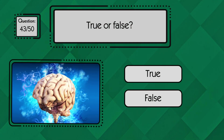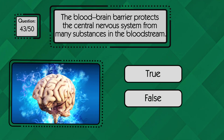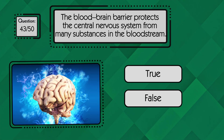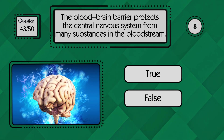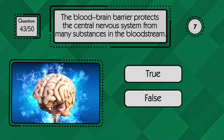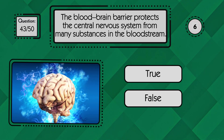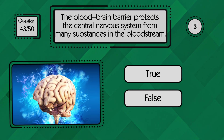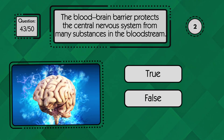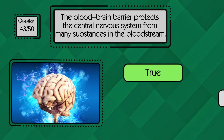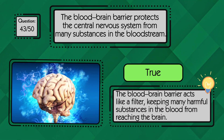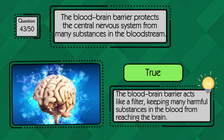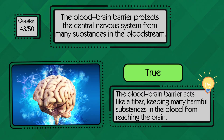True or false: the blood-brain barrier protects the central nervous system from many substances in the bloodstream. True — the blood-brain barrier does help protect the central nervous system from many blood-borne substances.